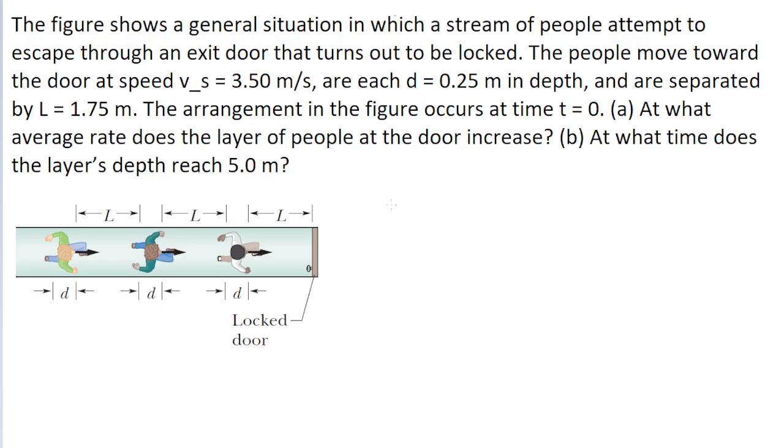So we've got people running towards the door, and the first part of the problem asks us for the average rate at which the layer of people at the door is increasing. This is kind of an unusual problem, because normally with problems related to speed, we're looking for the speed of a moving projectile or a moving object. But in this case, we're using speed in the sense of the rate at which a layer of depth is increasing, which is a little unusual and might throw some people off.